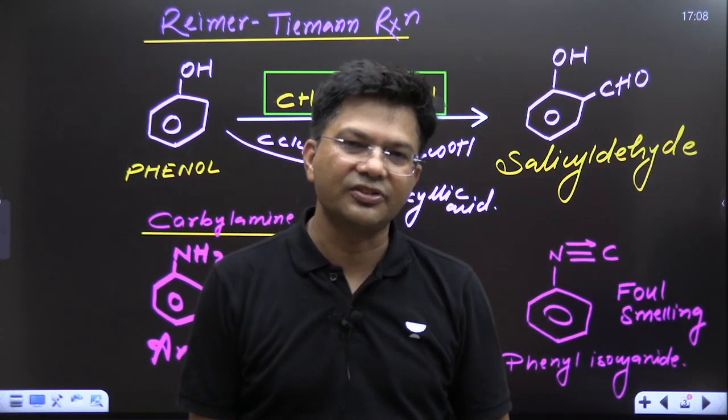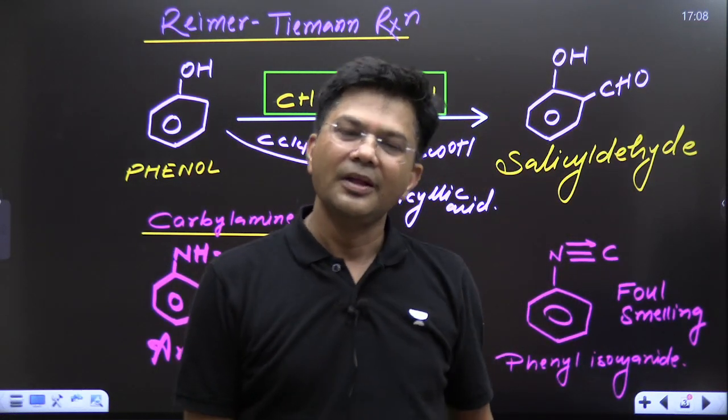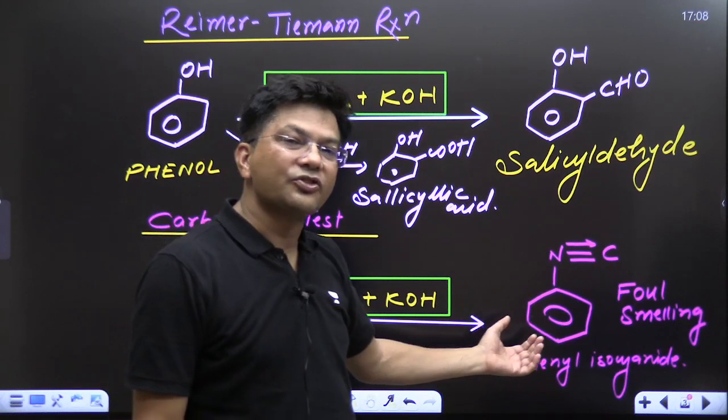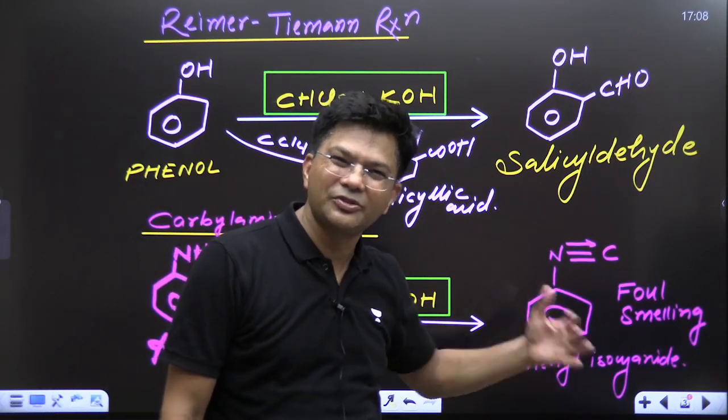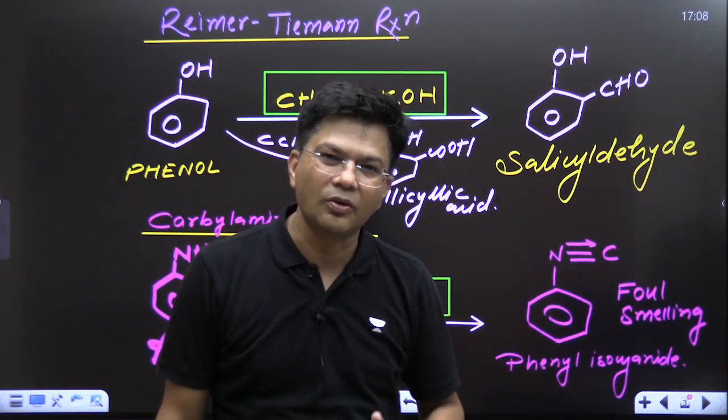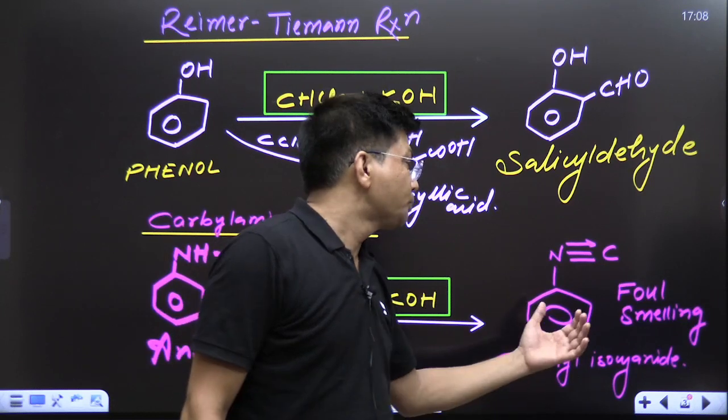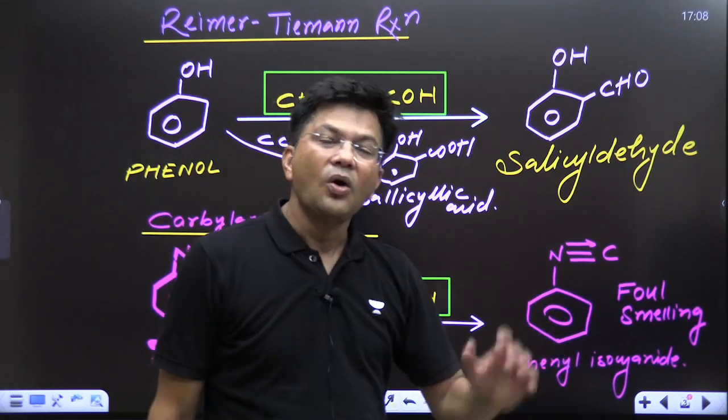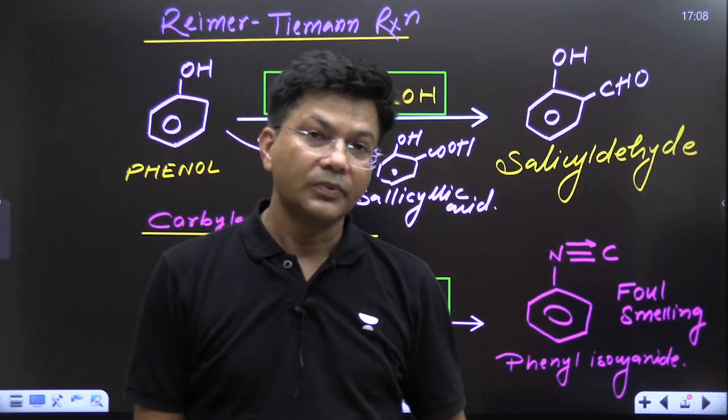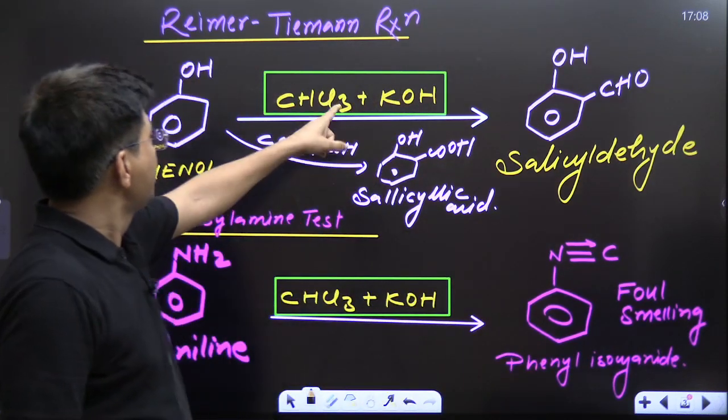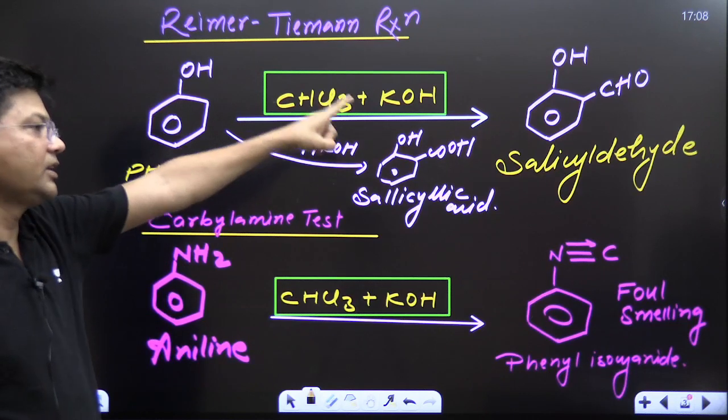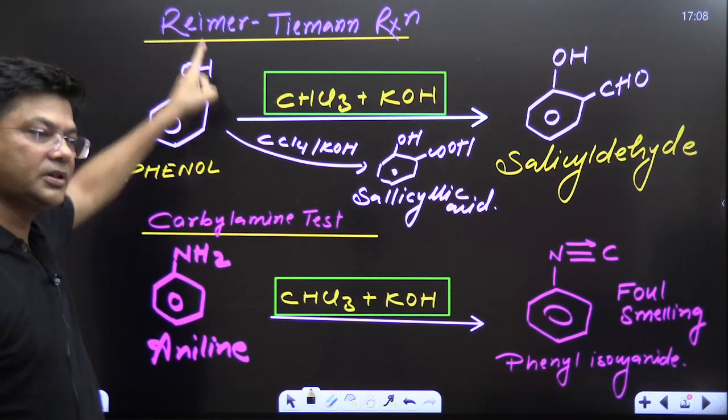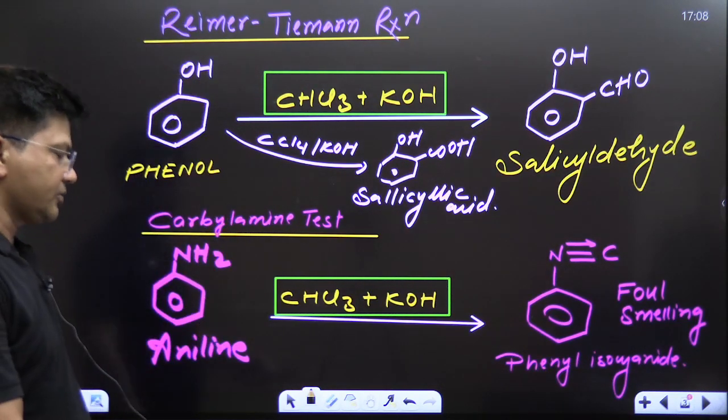So, chloroform KOH, if reacting with aniline or any one degree amine, basically better to say that chloroform KOH, when reacts with any one degree amine, whether it is aliphatic or aromatic, it is a distinguishing test. This is known as Carbylamine test because this carbylamine has foul smell. Foul smell is very, very unpleasant or bad smell. It is poisonous compound, isocyanide, phenylisocyanide, or you can say carbylamine. So, whenever chloroform KOH reacts with phenol, salicylaldehyde, Reimer-Tiemann reaction, otherwise Carbylamine test.